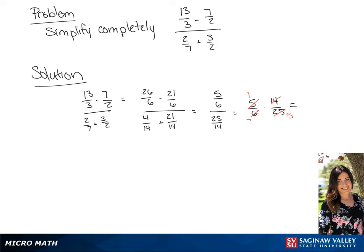We also have a 2 that goes into both the 6 and the 14, so we have 1 over 3 times 7 over 5. If we multiply that, we get 7 over 15 as our final answer.